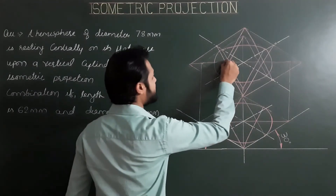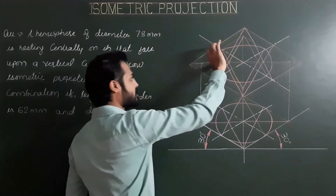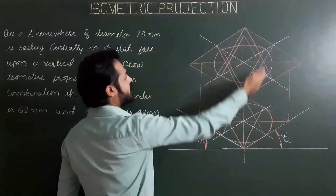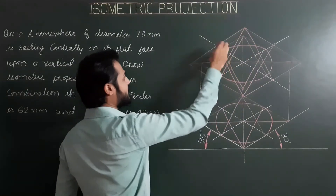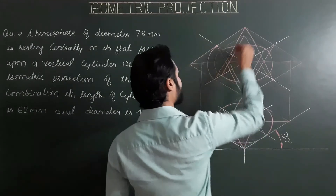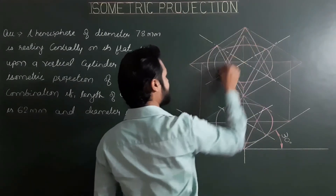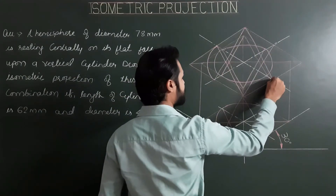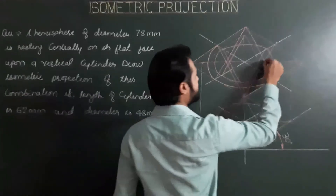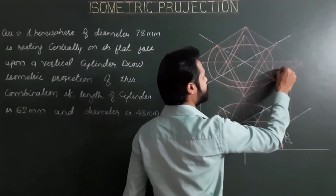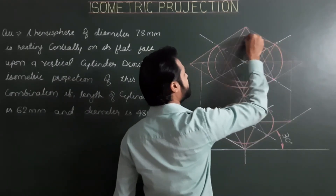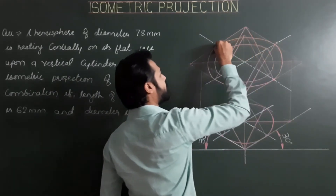From the first center, this is the first radius — diameter is 78. Drawing the first arc. Second center, second radius. Third center, third radius. Fourth center, fourth radius. The circular base of the hemisphere is now complete, resting centrally on its flat face on the upper circular face of the vertical cylinder.